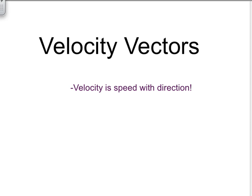Velocity vectors. Velocity is speed with direction, and that's what makes it a vector. The magnitude of the velocity vector equals the speed.